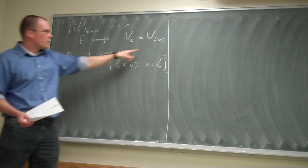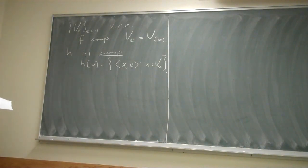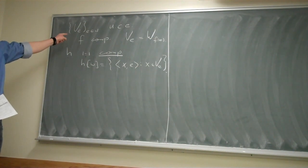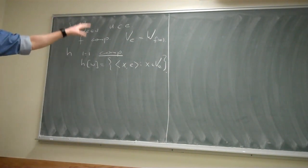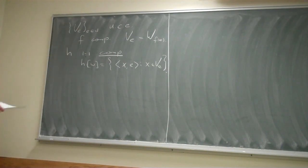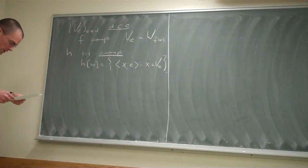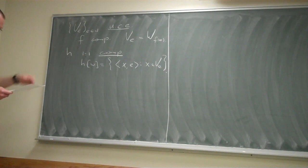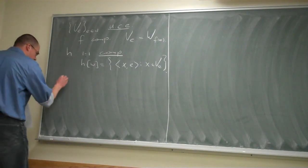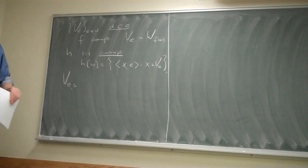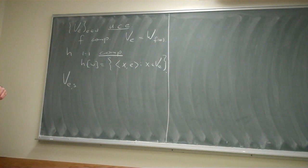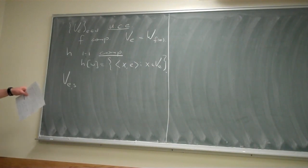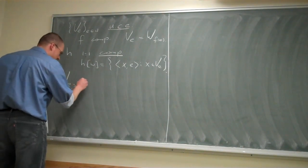For any uniformly CE sequence there are many F's that work. This shows that these are nice definitions of sequences of CE sets. With this we can define V_{E,s}, where the comma-S always meant intuitively 'computed in at most S steps.' Here comes an exact definition: V_{E,s} is the set of X such that there exists T ≤ S such that H(T) = (X, E).